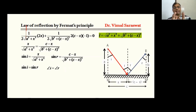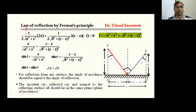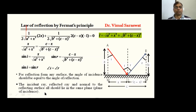This means the angle of incidence is equal to the angle of reflection. So for reflection from any surface, the angle of incidence equals the angle of reflection. Also, the incident ray, reflected ray, and the normal to the reflecting surface all lie in the same plane — this plane is our plane of incidence. These are the laws of reflection, and hence by using Fermat's principle we can easily prove the law of reflection.